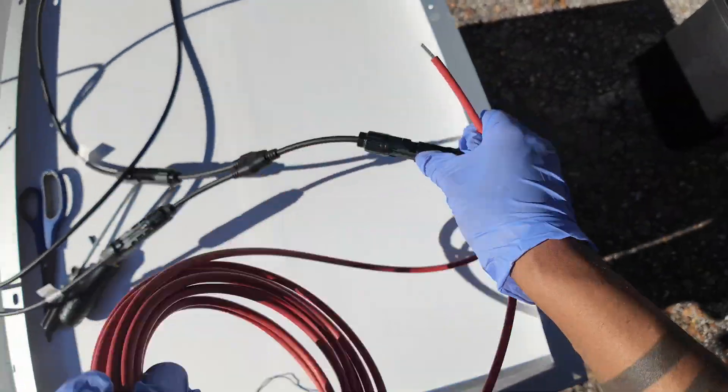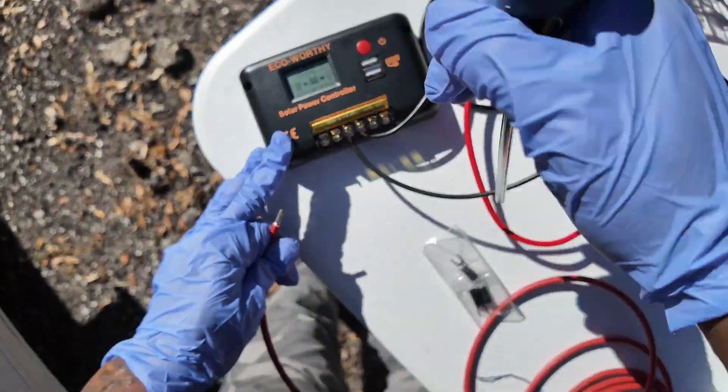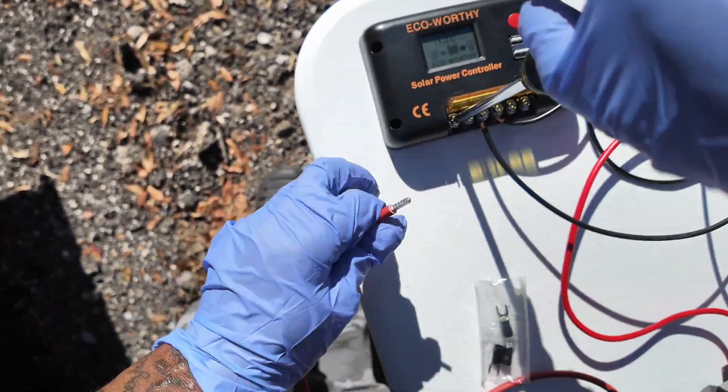The solar panels will also come with some solar extension cables, one black, one red, each of 5 meters in length or a little over 16 feet.